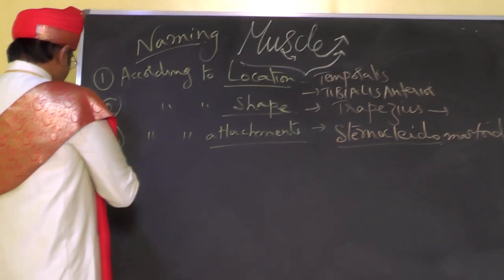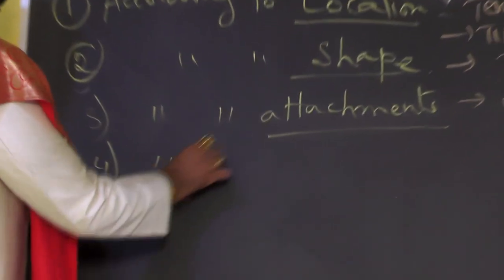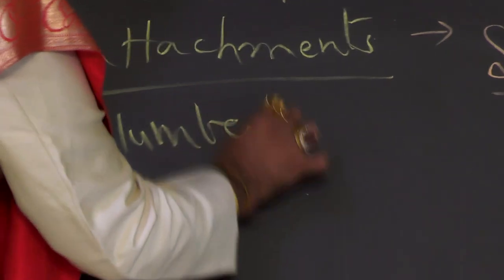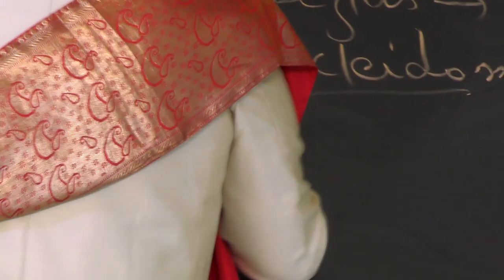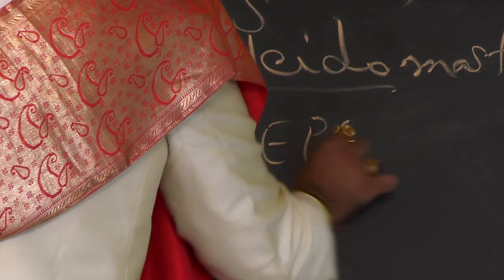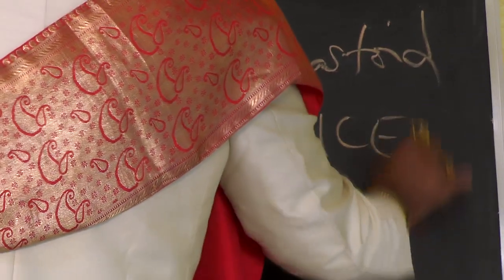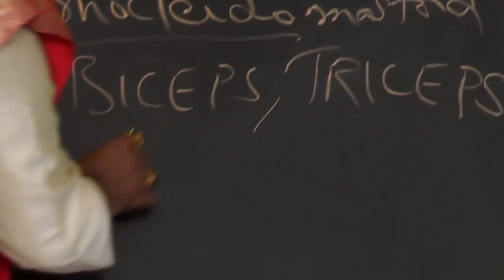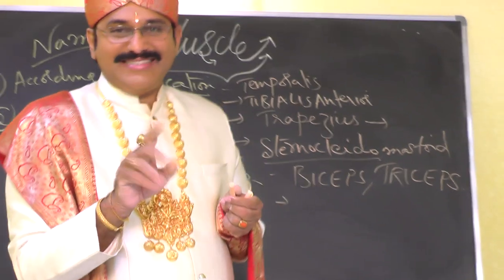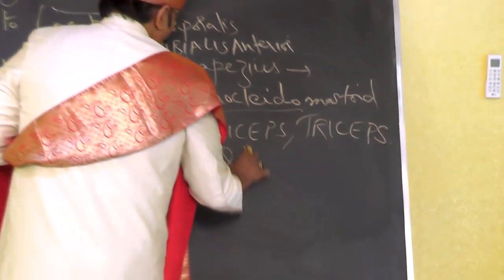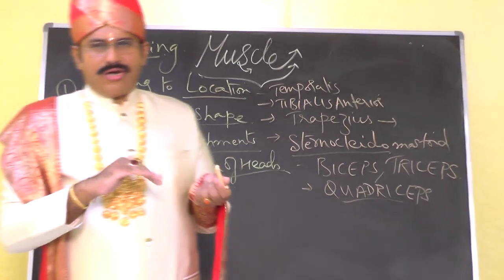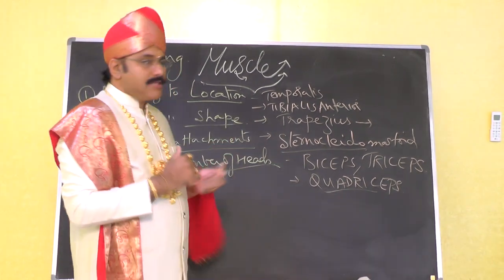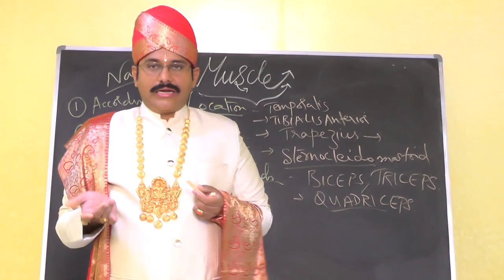Muscles are also named according to the number of heads. A muscle with two heads is called biceps (short head and long head). Three heads: triceps (long, medial, and lateral head). Four heads: quadriceps.